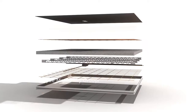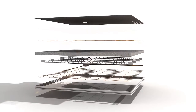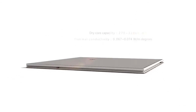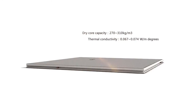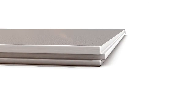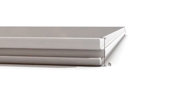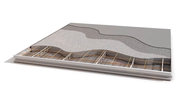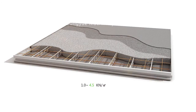Foam cement is set in a prepared truss and composited with the upper and lower layers, achieving the integration of load bearing and heat preservation. By adjusting the height, thickness, and density of the truss, the load capacity of the Nanocomposite Panel can reach 1.0 to 5.0 kN per square meter.